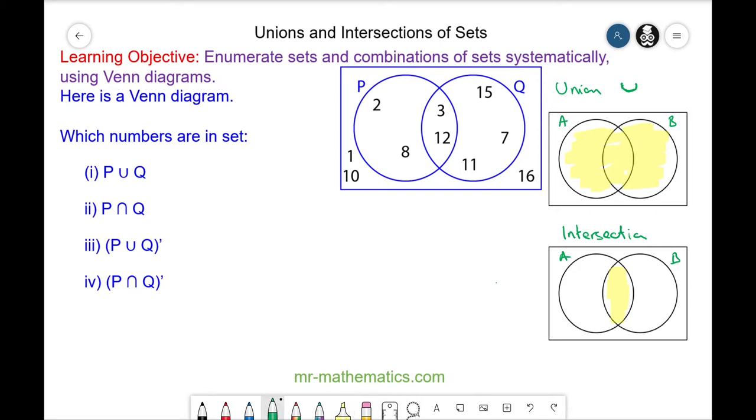We'll begin with identifying the numbers that fall within the union of P and Q. Within the union is within the area of the two sets. So these include the numbers or the elements of 2, 3, 7, 8, 11, 12, and 15.